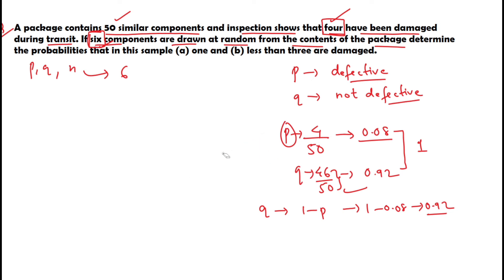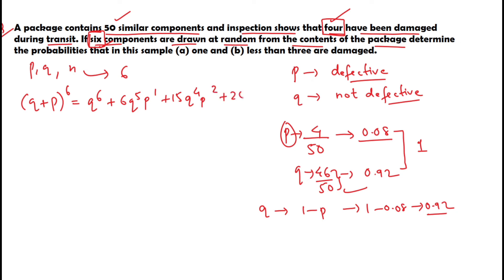Now let us go for the binomial expansion: (Q + P)^n where n = 6. This expands to Q^6 + 6·Q^5·P^1 + 15·Q^4·P^2 + 20·Q^3·P^3 and so on. Notice that when you add the powers of Q and P in each term, they always sum to 6, because n = 6.